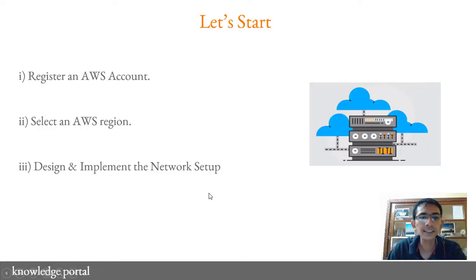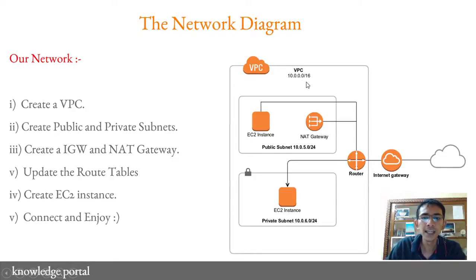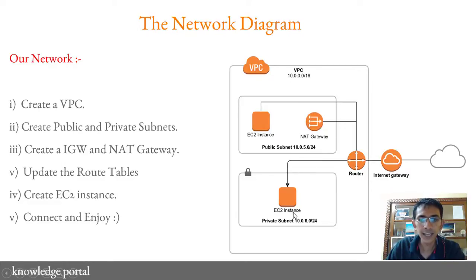The third thing is to design and implement the network setup. We have a pretty simple network design where we will create one VPC with a CIDR of 10.0.0.0/16. In this VPC, we will have two subnets: one public subnet and one private subnet, with CIDRs of 10.0.50.0/24 and 10.0.60.0/24 respectively.